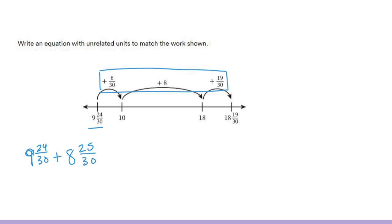Now, it says write an equation with unrelated units. Right now, we have related units and we have like units. So, we have thirtieths and thirtieths. So, we need to figure out how to change those into different units that are unrelated. If I use my composition, I can divide these fractions by the same number and get different fractions.